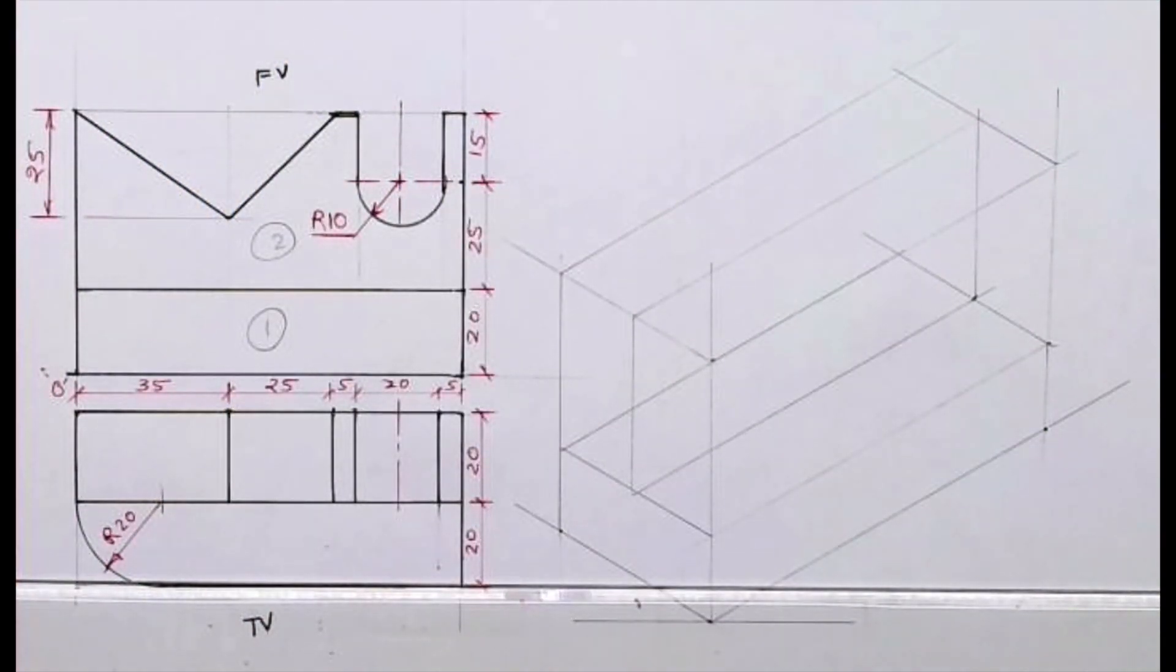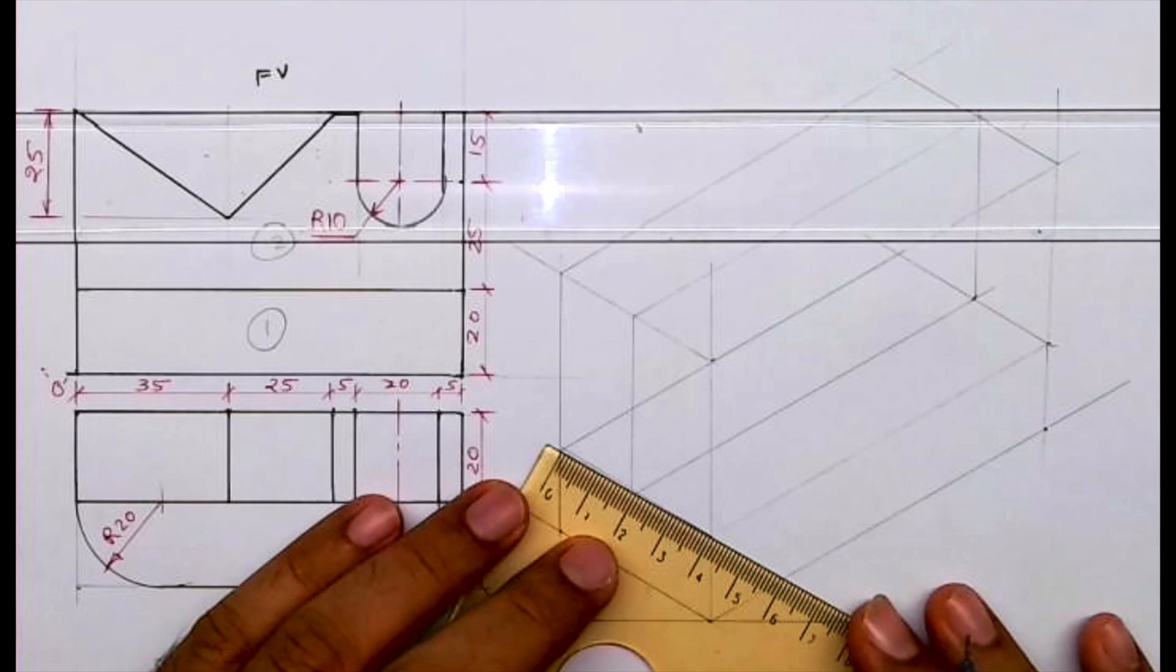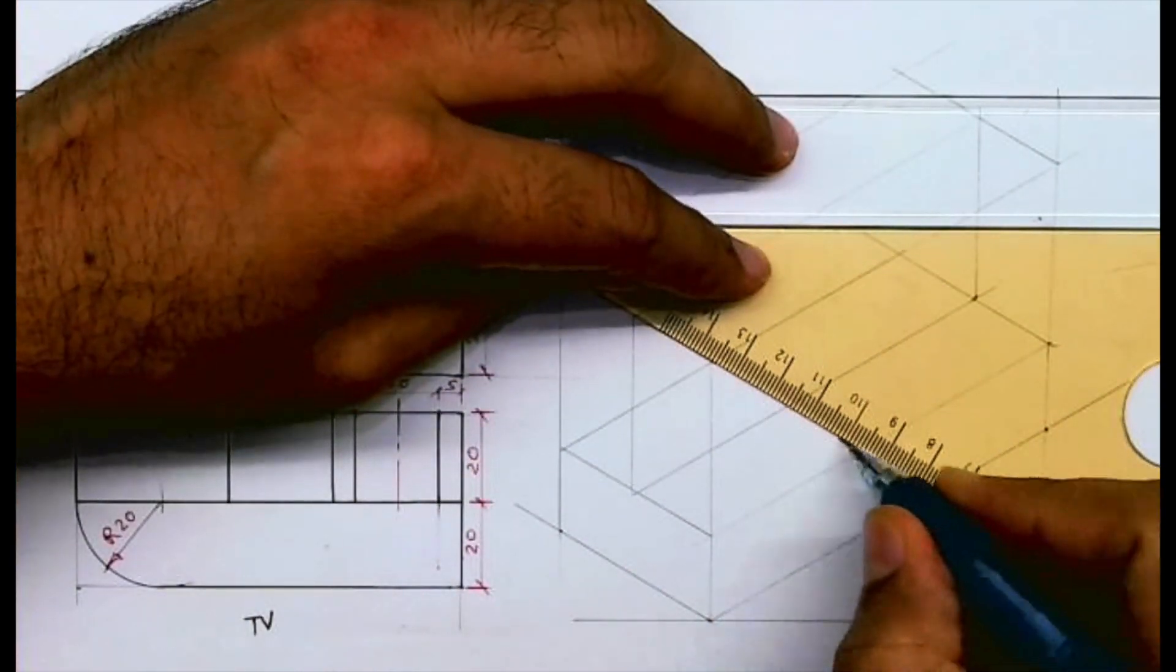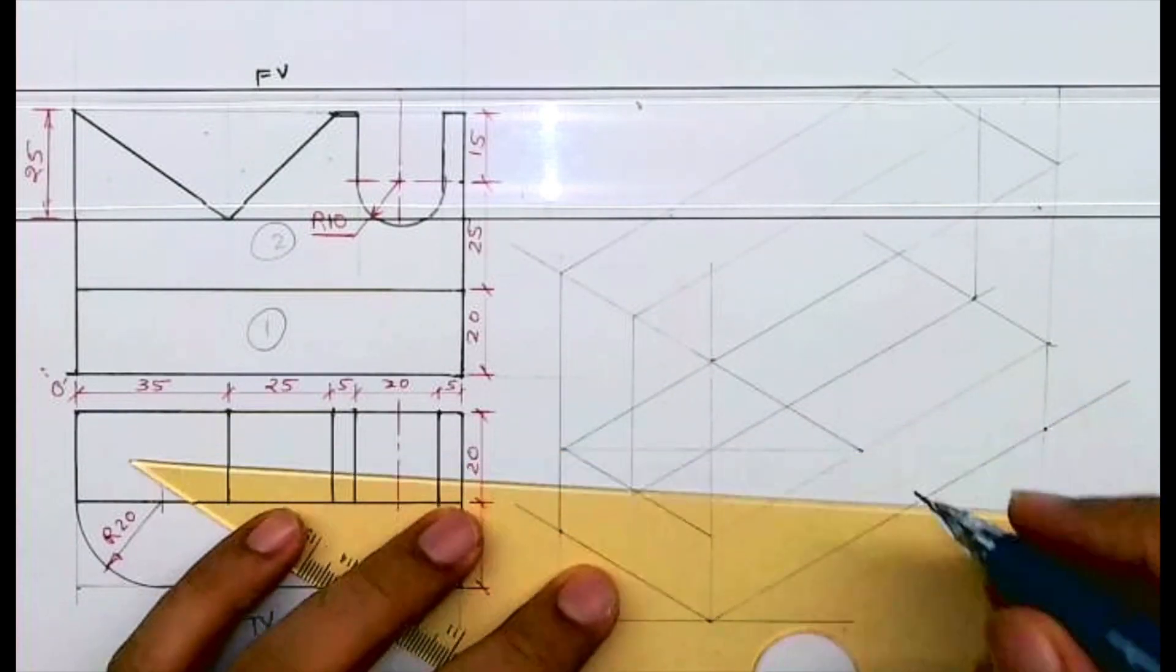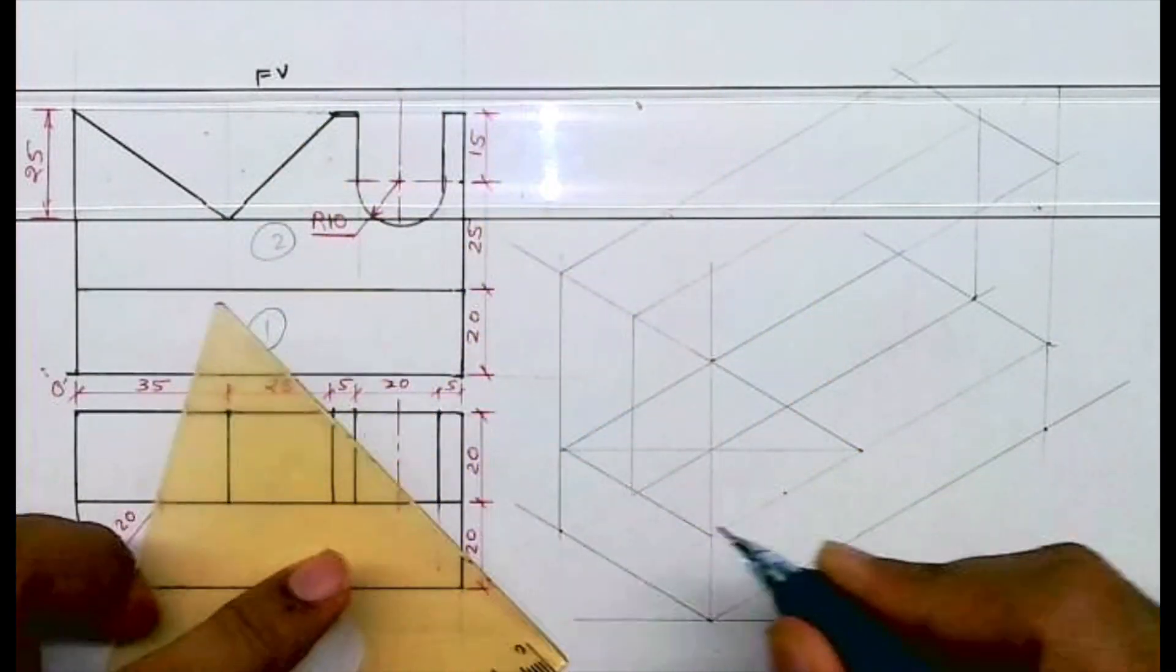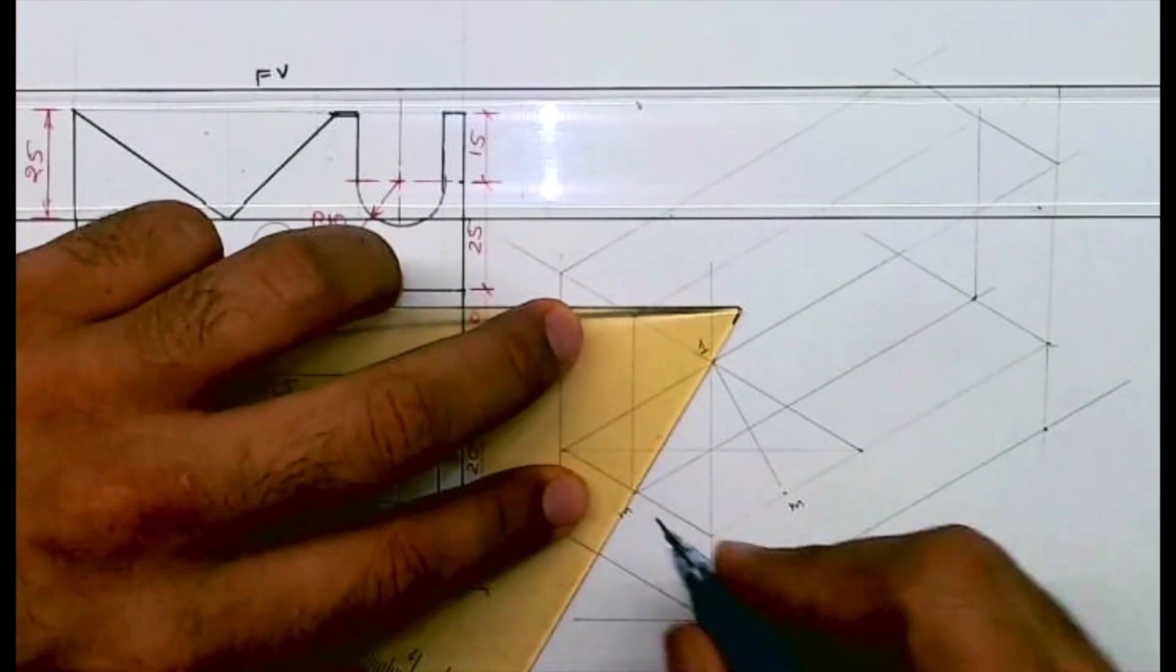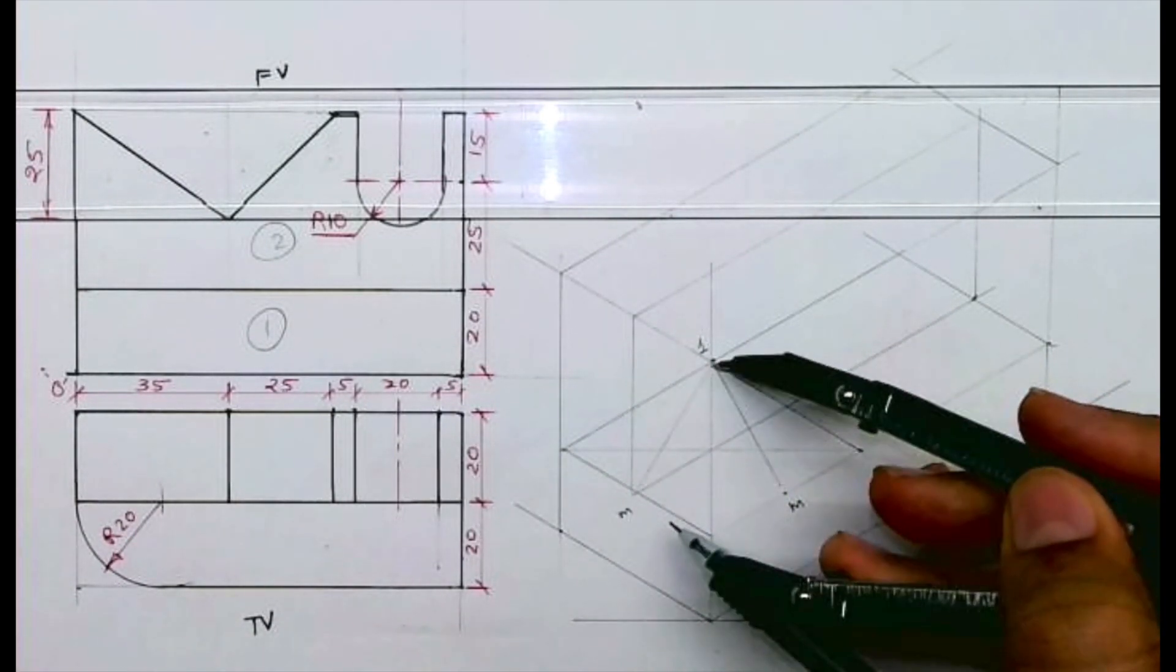Now we need to draw radius 20. To draw radius 20 we'll take 40, we'll take 40 from here and 40 from here. Then we'll draw line, then I will join longest diagonal. See this, I already have a midpoint, here also I will take midpoint, join to this corner. This is point 1, this is M. Draw 1 to M, then you can draw R.